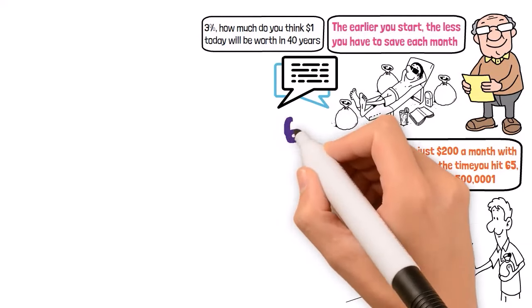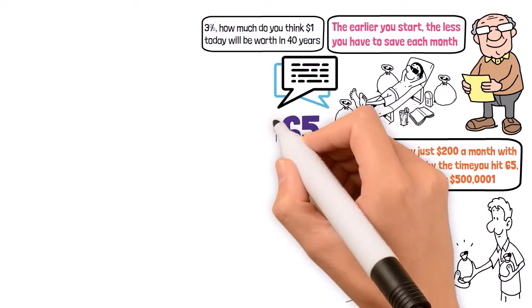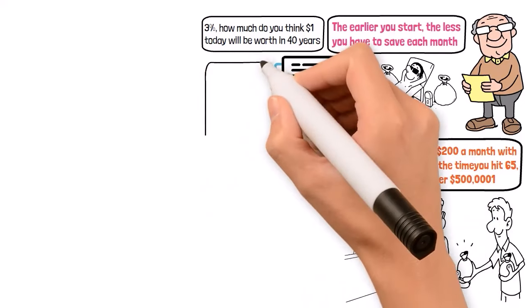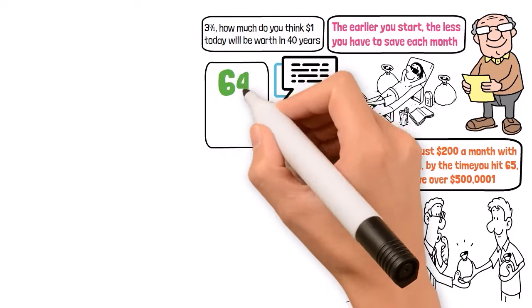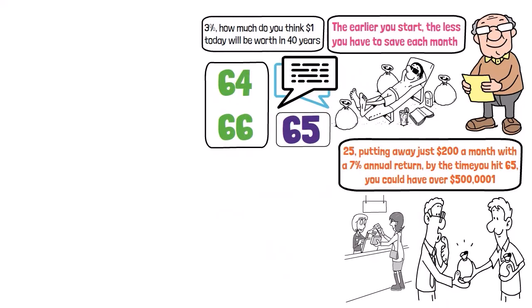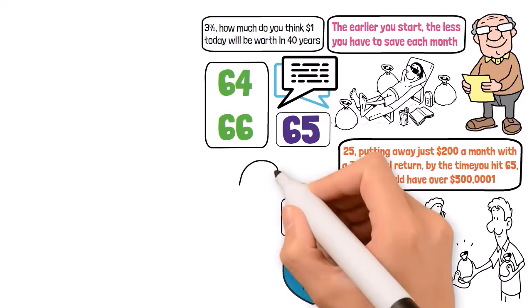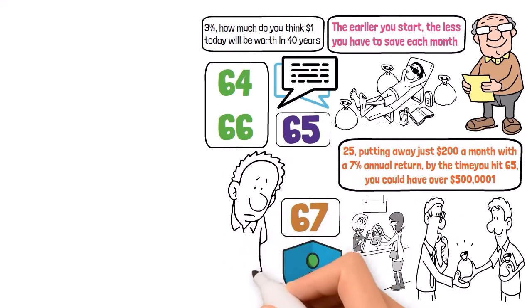65 has been etched in our minds as the retirement finish line for years. But here's the twist. The average retirement age in the U.S. is now 64 and many are pushing it to 66. Why? Because the full retirement age for Social Security benefits for those born in 1960 or after is actually 67. Retiring at 65 might seem like a sweet deal, but it comes with its own set of challenges.